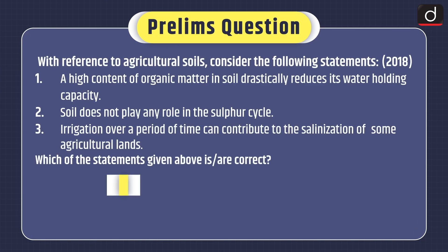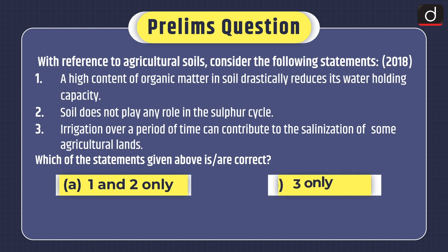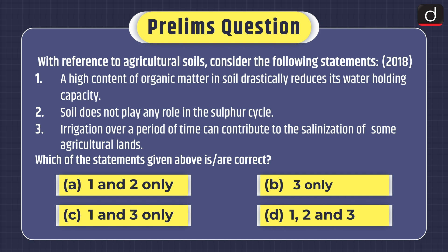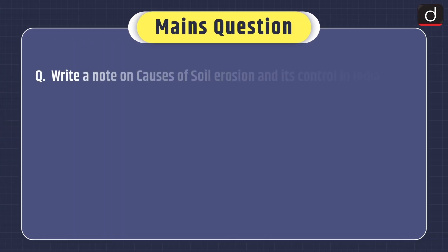Now it's time for the practice questions. Prelims question: With reference to agricultural soils, consider the following statements. 1. A high content of organic matter in soil drastically reduces its water holding capacity. 2. Soil does not play any role in the sulphur cycle. 3. Irrigation over a period of time can contribute to the salinisation of some agricultural lands. Which of the statements given above is or are correct? Options: 1 and 2 only, 3 only, or 1, 2 and 3? Mains question: Write a note on causes of soil erosion and its control in India.